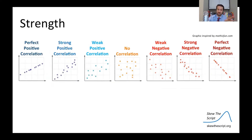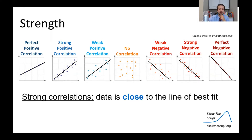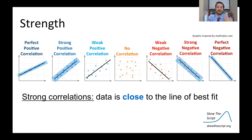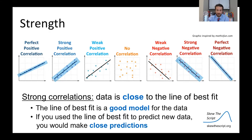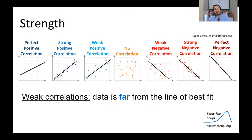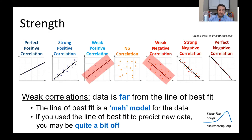Now let's talk about strength, the second component of correlation. We'll draw our line of best fit in these charts. For strong correlations, either positive or negative, the data will be close to the line of best fit. You can see here for the perfect or strong correlations, we've drawn a blue band around the lines of best fit — the data is generally close to them. So the line of best fit is a good model for the data, and predictions made from it will be pretty close. On the flip side, weak correlations are not necessarily close to the line of best fit — the data can be quite far, splaying out from the line. We think of this as a 'meh' model for the data, where predictions might be quite a ways off.